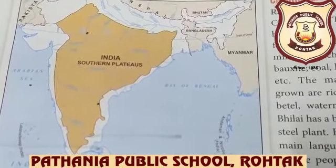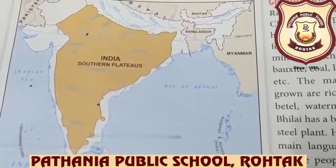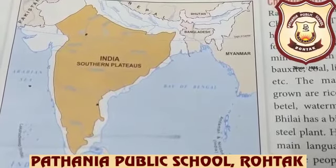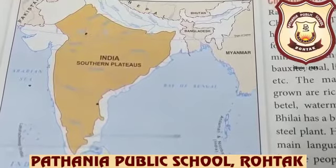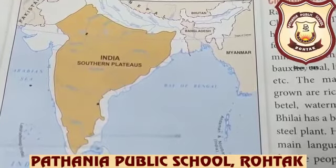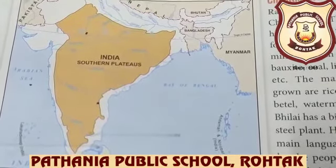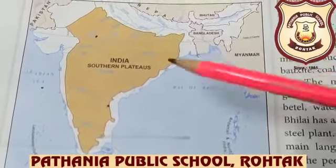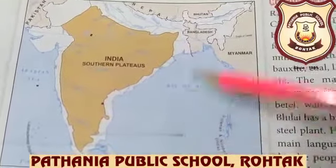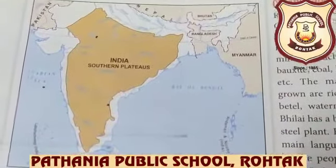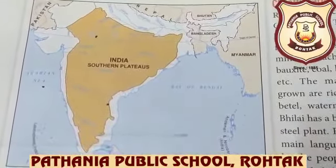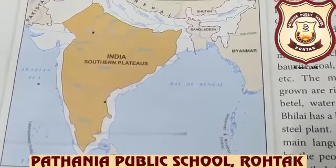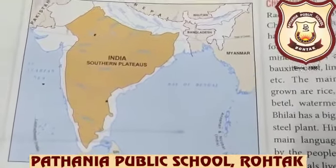This region is rocky and uneven, also called the Great Plateau of Peninsular India. Plateaus are surrounded by mountain ranges on all sides. River Narmada divides the southern plateau into two parts.